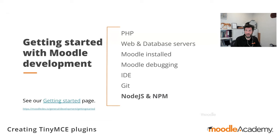Getting started with Moodle development is always fun. There are many ways to set up your development environment depending on your operating system and personal preferences. Essentially you need a recent version of PHP, a web server such as Apache or Nginx, and a relational database such as Postgres, MariaDB, MS SQL Server, or MySQL. You'll also need Moodle installed with debugging enabled. Most developers use Git for version control and an IDE such as VS Code or PHPStorm. For TinyMCE plugin development, you'll also need Node.js with the Node package manager.